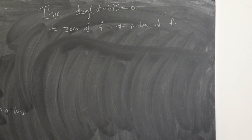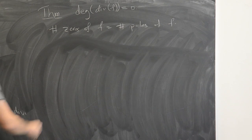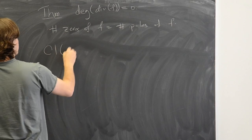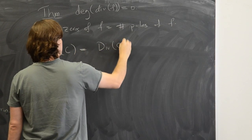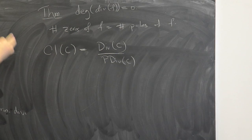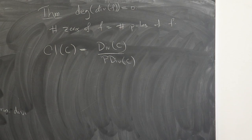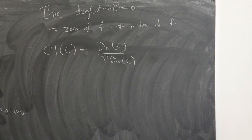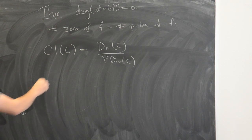We have the group of divisors and the subgroup of principal divisors; the quotient is called the class group of the curve. The class group of C is the group of all divisors modulo the principal divisors. Since principal divisors have degree zero, the degree homomorphism factors through the class group, and you can define the subgroup of degree-zero classes.